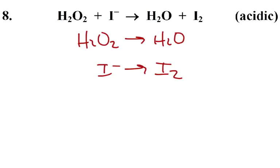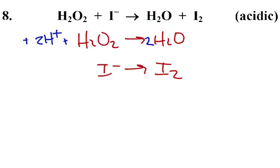Now we're going to balance our oxygens. On the left, we have two; on the right, we have one. So we're going to add another water. Next thing, we'll do our hydrogens. On the right side, we have four hydrogens, left side we have two, so I'm going to add two more hydrogen ions - they're always floating around. Now the charge: which side is more positive? The left side, so we're going to add two electrons to the left side.